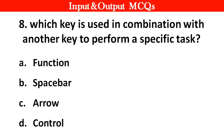Next question. Which key is used in combination with another key to perform a specific task? Options: A. Function, B. Space bar, C. Arrow, D. Control. Right answer is option D: Control.